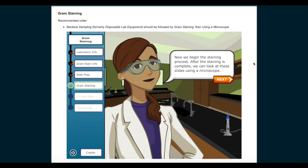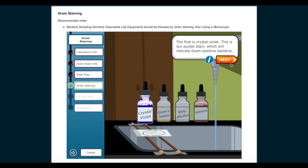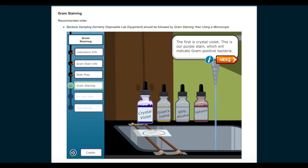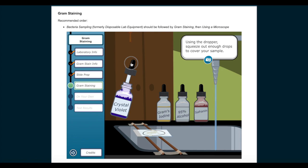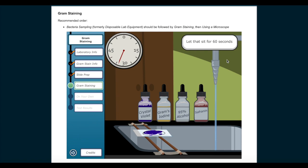Now we begin the staining process. After the staining is complete, we can look at these slides using a microscope. We use four chemicals to stain a slide. We apply them in a specific order and rinse the slide off under slow running water in between each chemical. The first is crystal violet. This is our purple stain, which will indicate gram-positive bacteria. What is crystal violet? It is a violet-colored dye. The dye penetrates the cells of gram-positive as well as gram-negative microorganisms. This happens because components in the dye form positively charged ions that associate with negatively charged components in cell walls. Using the dropper, squeeze out enough drops to cover your sample. Let that sit for 60 seconds. Now rinse it under slow running water.